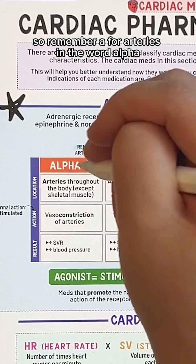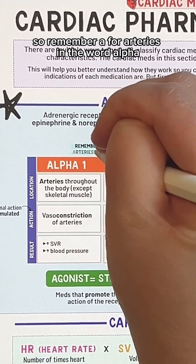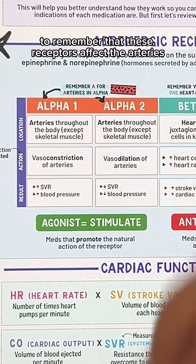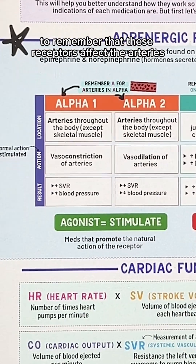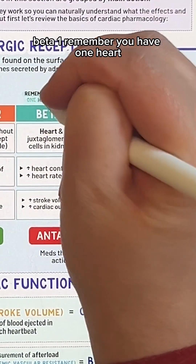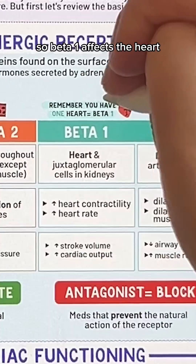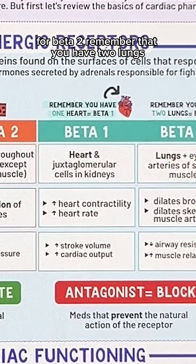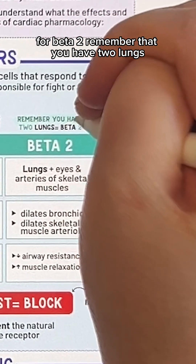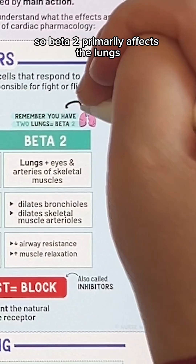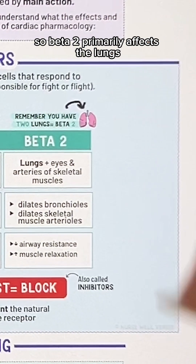Remember A for arteries and the word alpha to remember that these receptors affect the arteries. For beta 1, remember you have one heart, so beta 1 affects the heart. For beta 2, remember that you have two lungs, so beta 2 primarily affects the lungs.